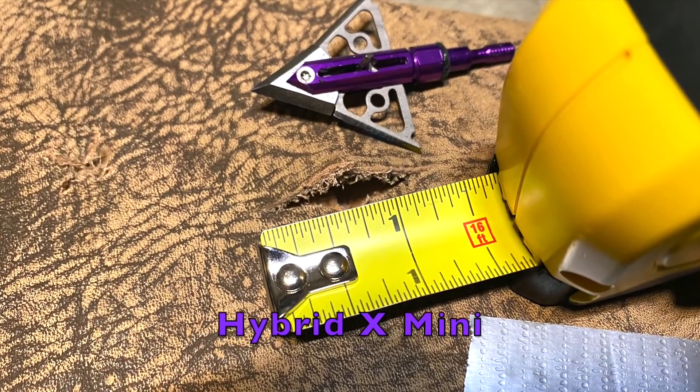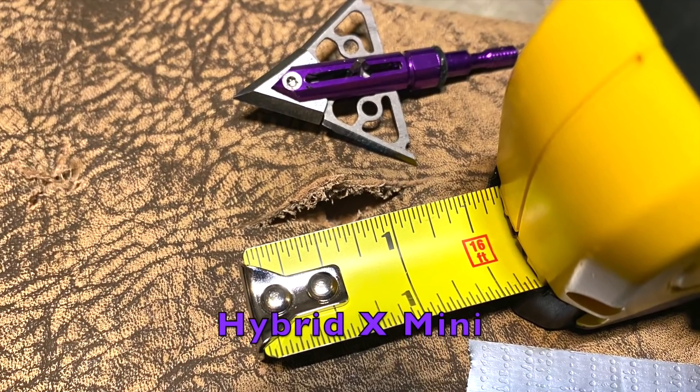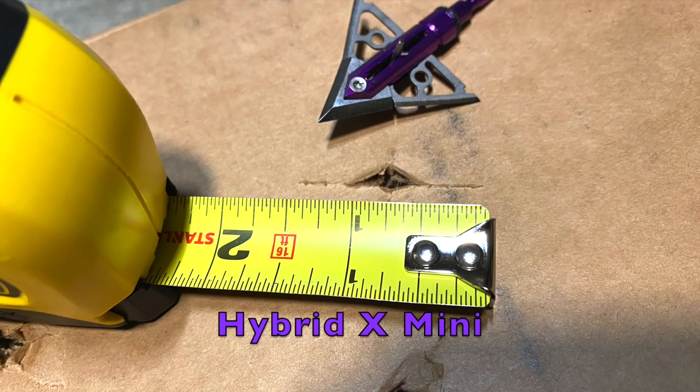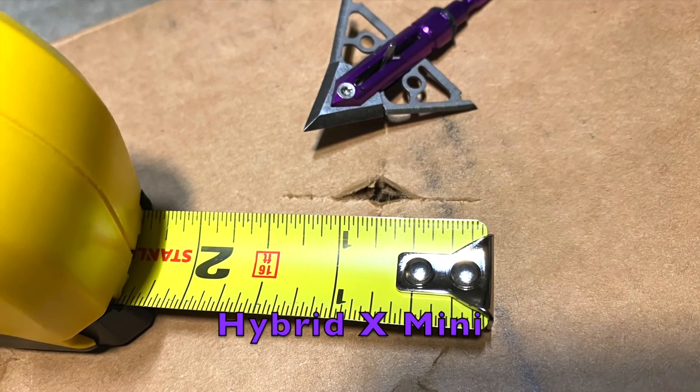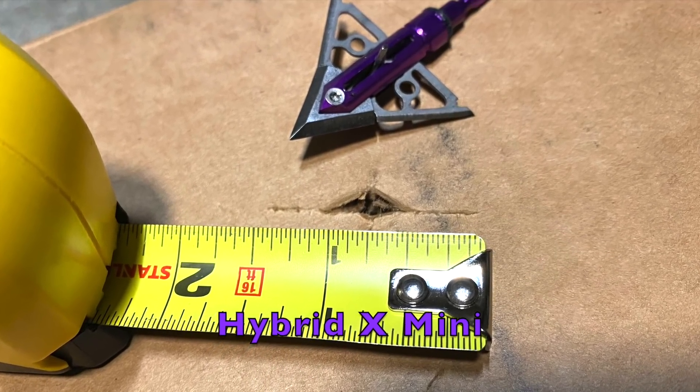The Hybrid X opened one and a quarter inches on the initial impact and then here you can see on the back of the cardboard box it was at the full one and a half inches.